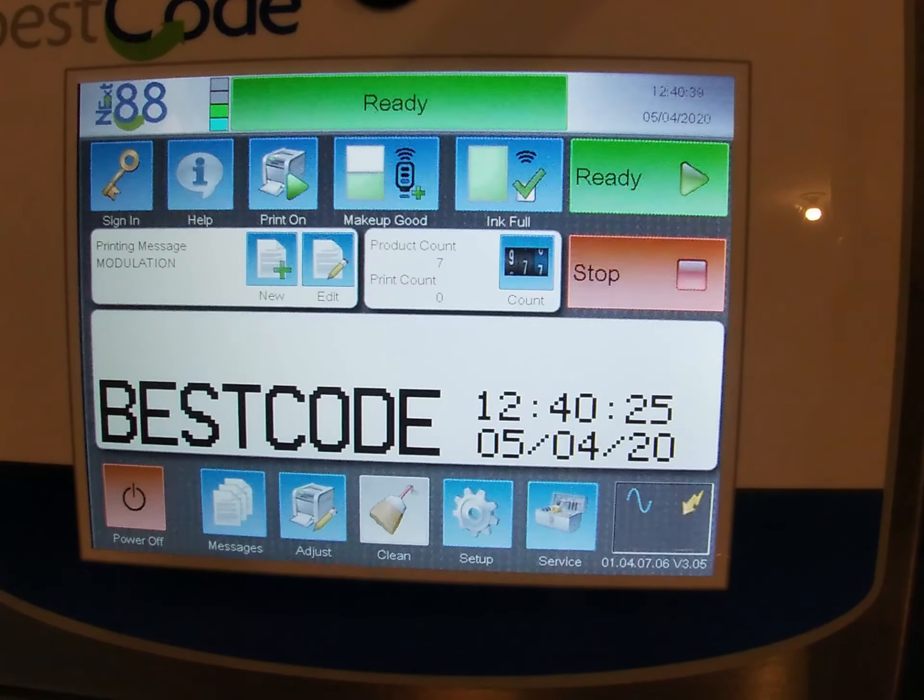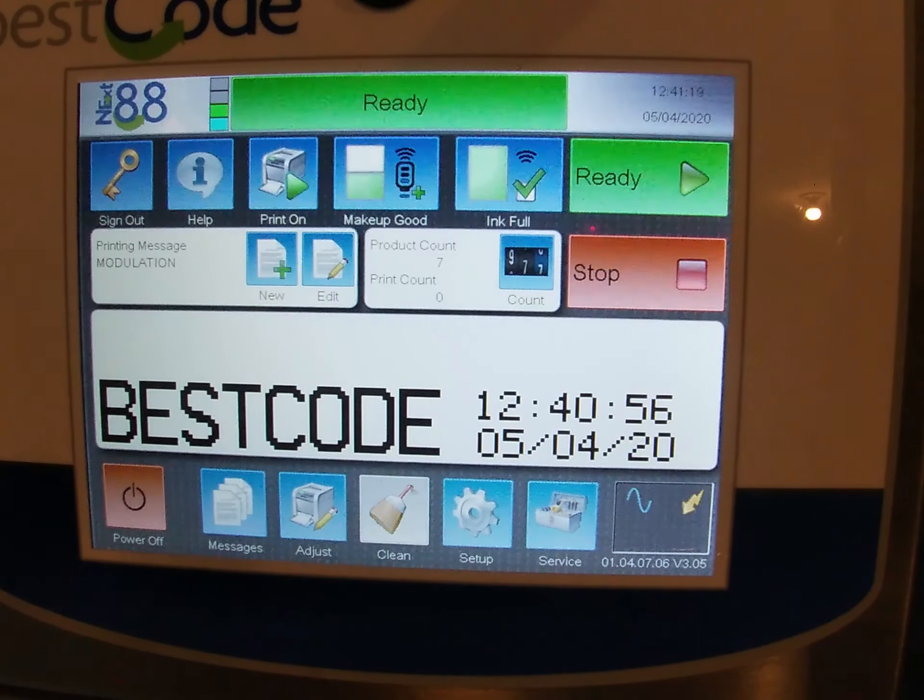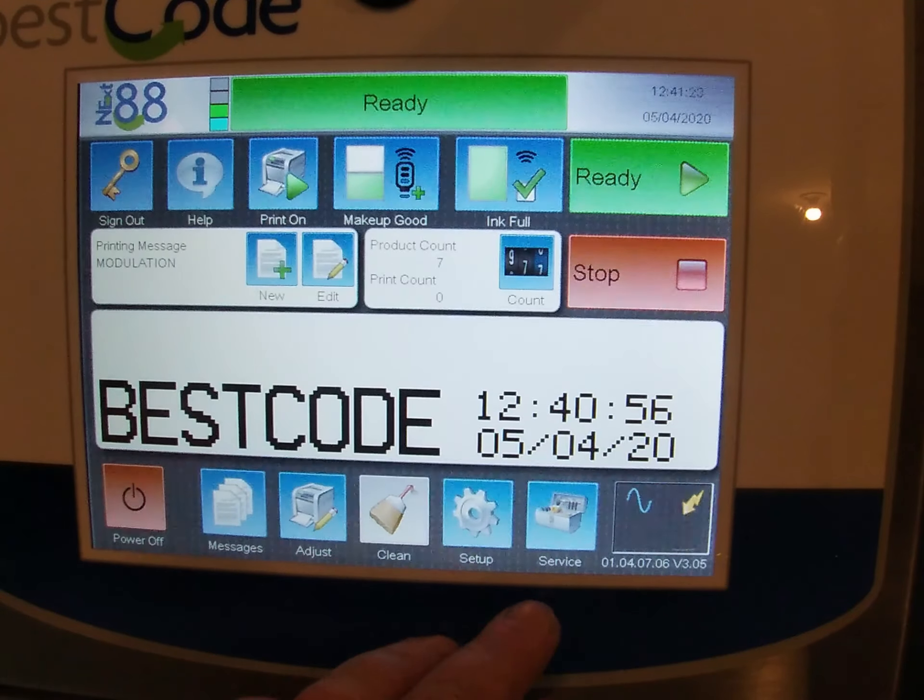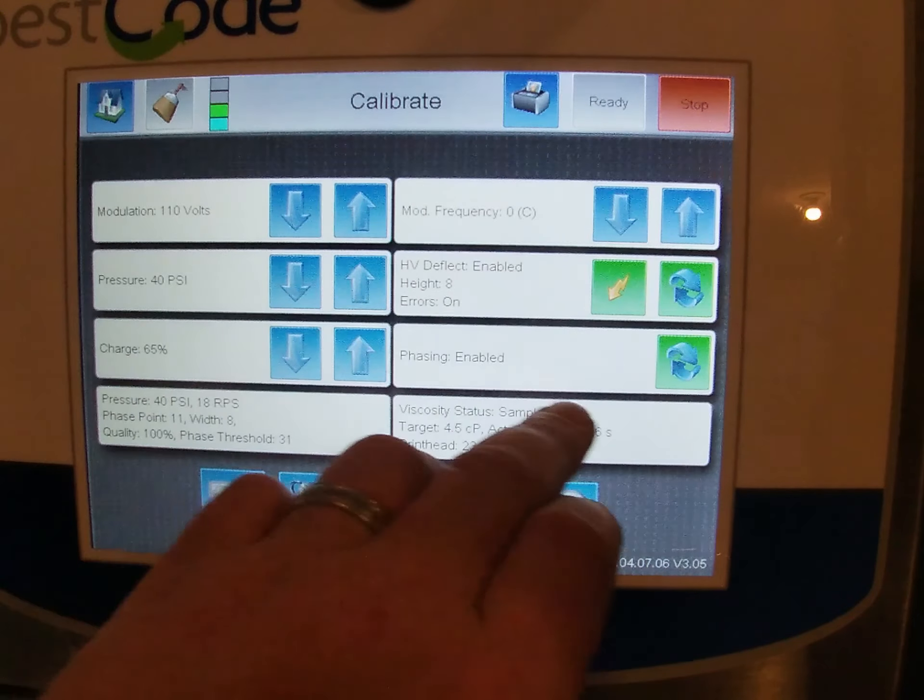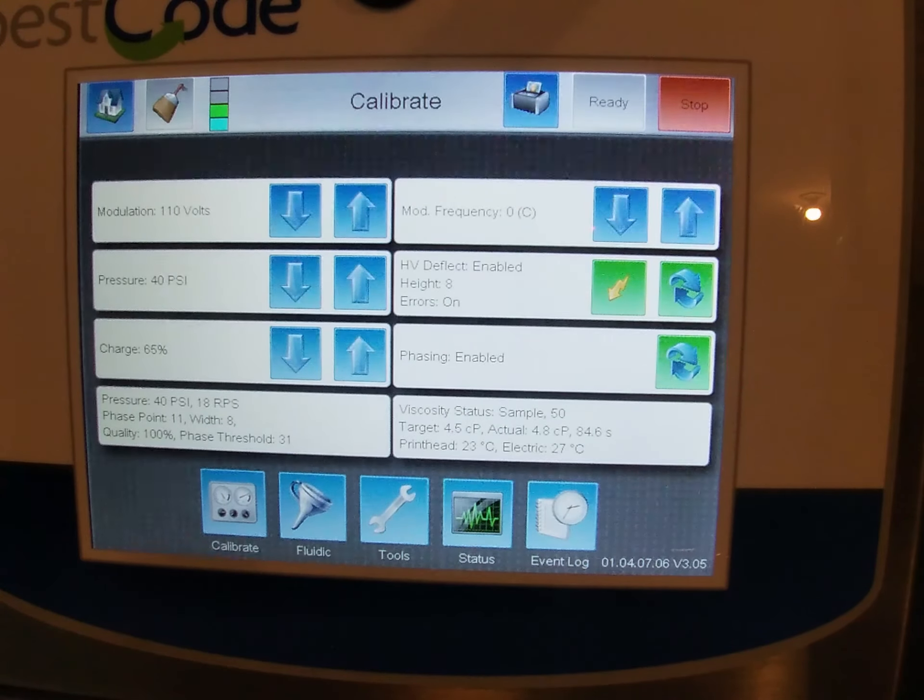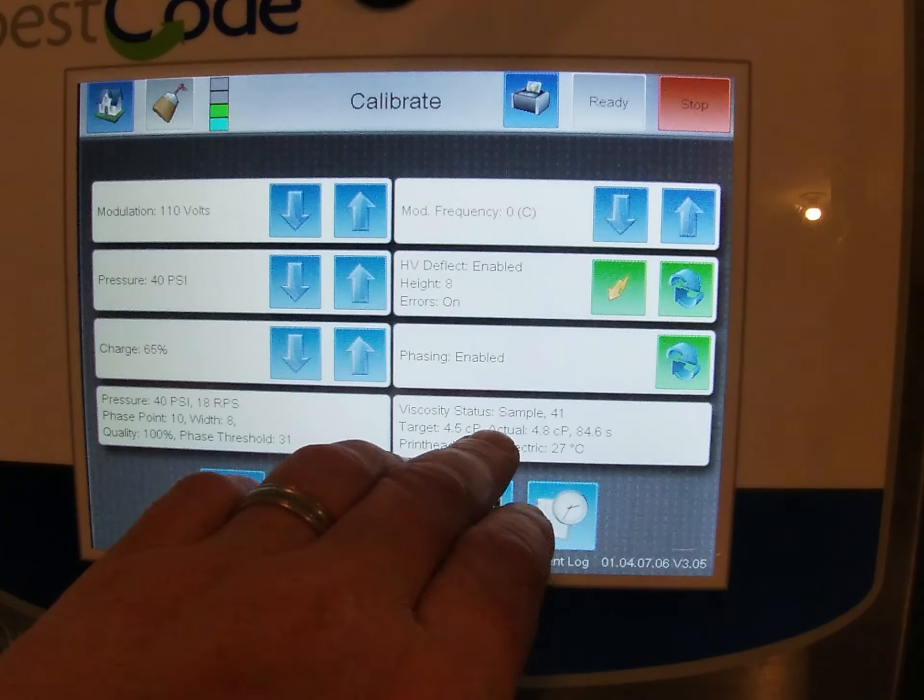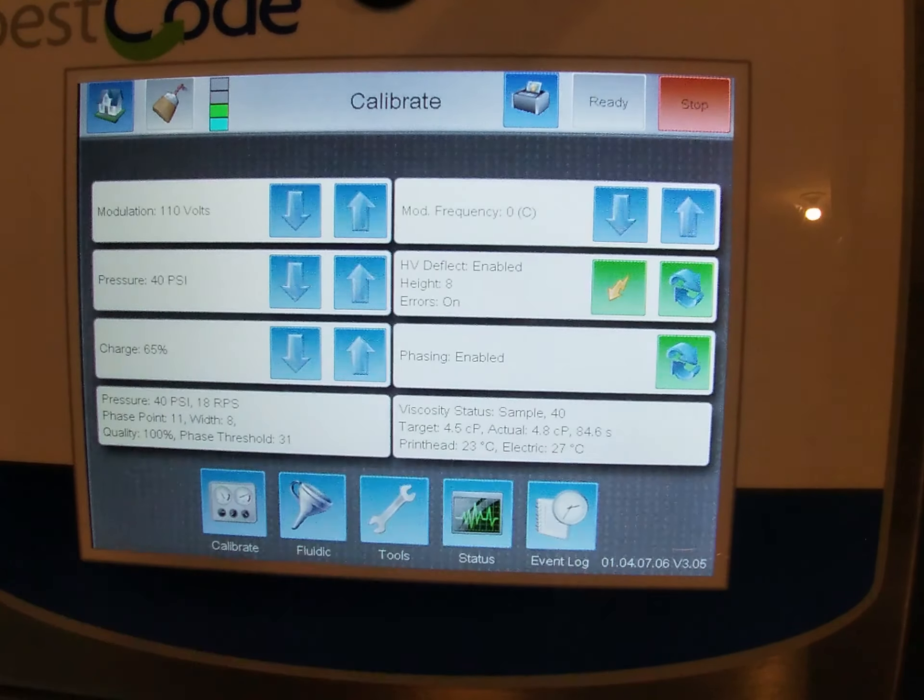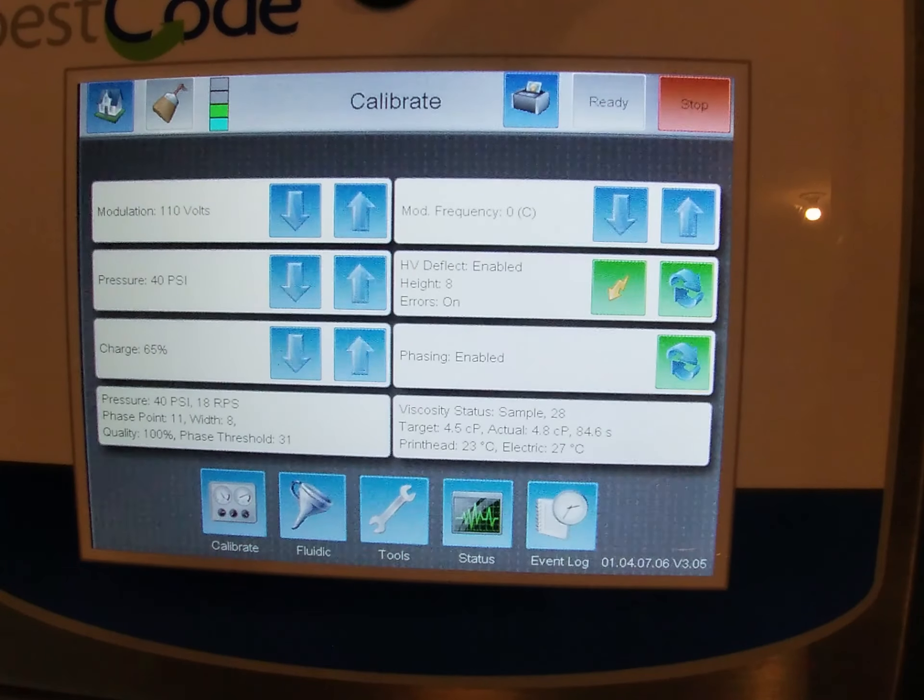Selected an average message here, just a simple single line, two line code just so that we can see the print quality. And what we're going to do now is we need to establish whether the viscosity is within range for running a modulation test. And if you remember from one of the other training tutorials, the target was 4.5. We want to be 0.5 either way to be within range, so anywhere from 4 to 5. Now this currently is set to 4.8, so we're within range. So we can actually start doing the modulation test.